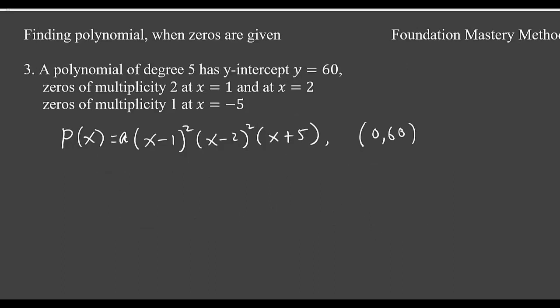We are taking a third example. It says a polynomial of degree 5 has y-intercept y equals 60, and then zeros are like this. So then you form the equation of polynomial like a(x minus 1) squared (x minus 2) squared, and then (x plus 5).